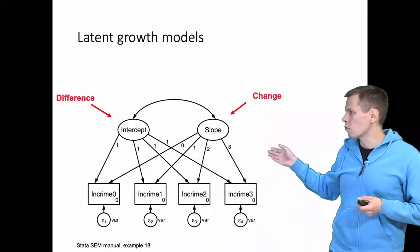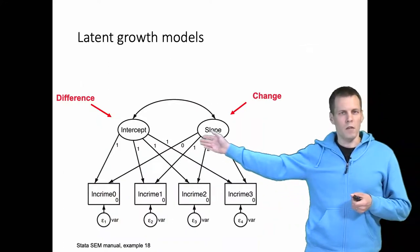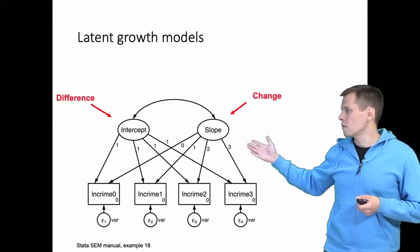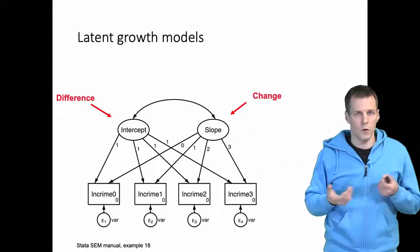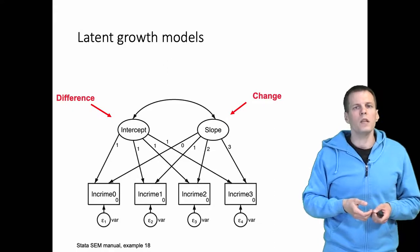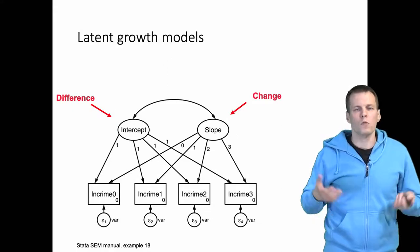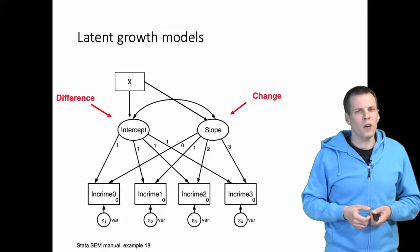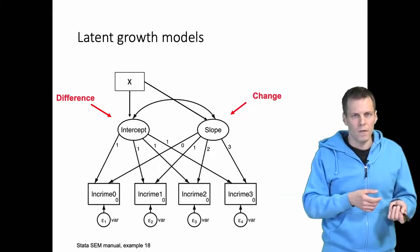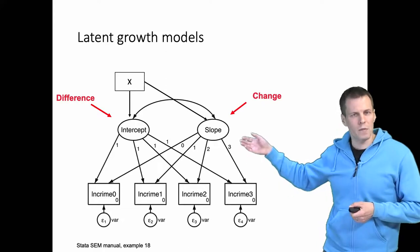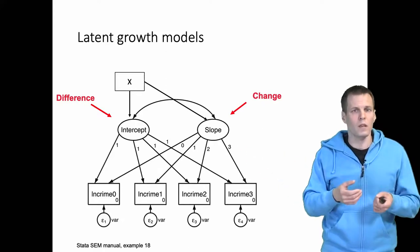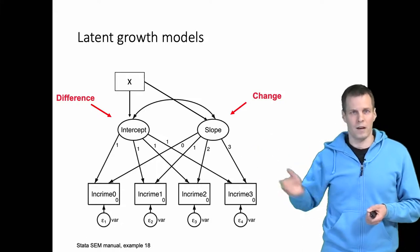This is the latent growth model, so intercept here gives us the initial difference and slope here gives us the direction of change for each company. We might be interested in explaining these two variables by adding a third variable x. Are we more interested in how x explains initial difference, or how x explains whether some companies are improving more than others?